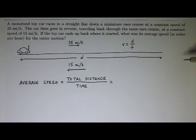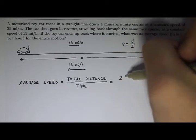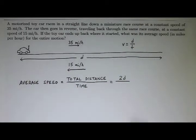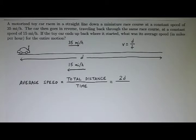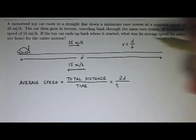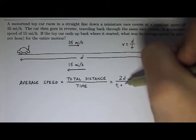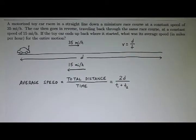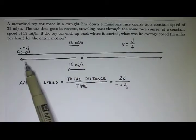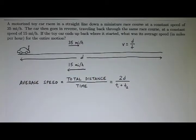The total time, well there's a time for the way to the end of the track and then there's another time when he went in reverse. So I'll call those T1 and T2. So T1 is the time to go from the start to the finish and then T2 is the time to go from the finish back to the start in reverse.